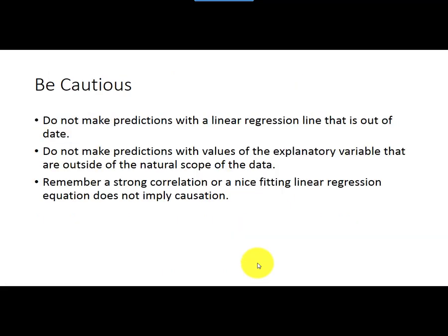So the last word of wisdom here is to be cautious when you're doing linear regression. You don't want to make predictions with our regression line that is out of date. So if your data is not current and you're trying to make current predictions, I would not suggest using that model. Dated linear regression lines are not a great idea to use them to make predictions about current things.